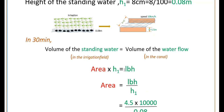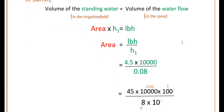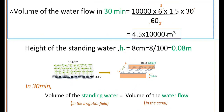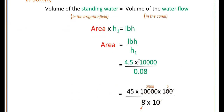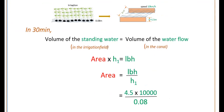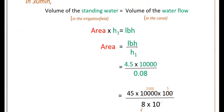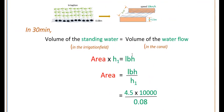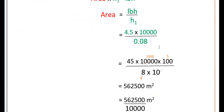So area into h1 is equal to LBH, where LB is the area of the irrigation field. Therefore, area is equal to LBH divided by h1, that is equal to 4.5 into 10,000 divided by 0.08. So 4.5 into 10,000 by 0.08 gives 562,500 meters square.